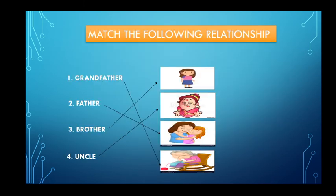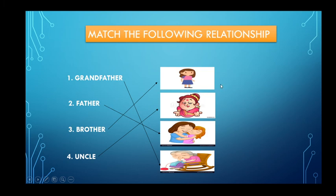So students, you have understood the relationships — how relationships are important for us, how these relationships play an important role in our life, how we get knowledge from our family members, and what is the value of our family. We can learn various things from our family members. Keep loving your parents, keep loving your family. Stay happy, stay safe, and stay healthy at home. Do not go outside during the lockdown period. Thank you.